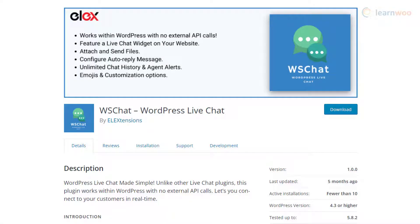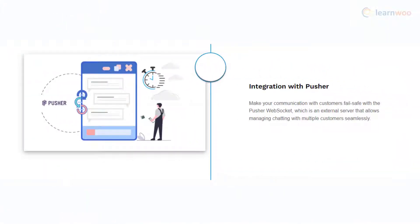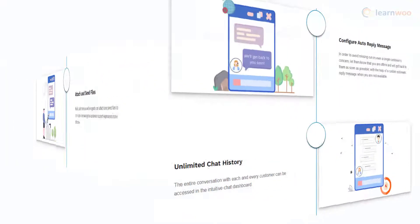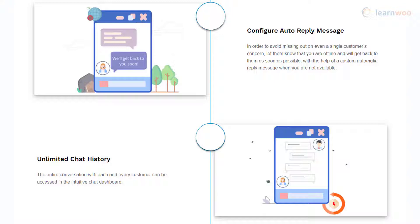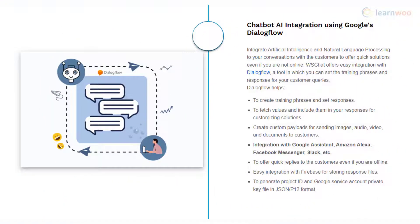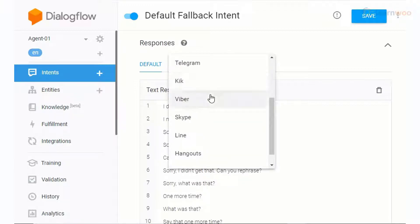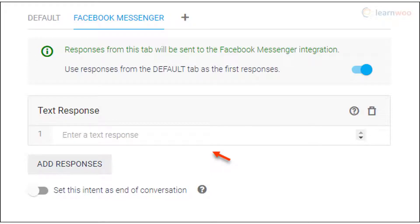If you are looking for a live chat solution that fully integrates with WordPress without any external API calls, WS Chat is what you're looking for. You can use your own dedicated server or use Pusher WebSockets APIs to make it flexible with any server. It has several advanced options such as file attachments, automatic replies, unlimited chat history, etc. With the premium version, you can integrate Google's DialogFlow to create a chatbot and make use of Alexa Voice Services, Google Assistant, Facebook Messenger, Slack, etc.